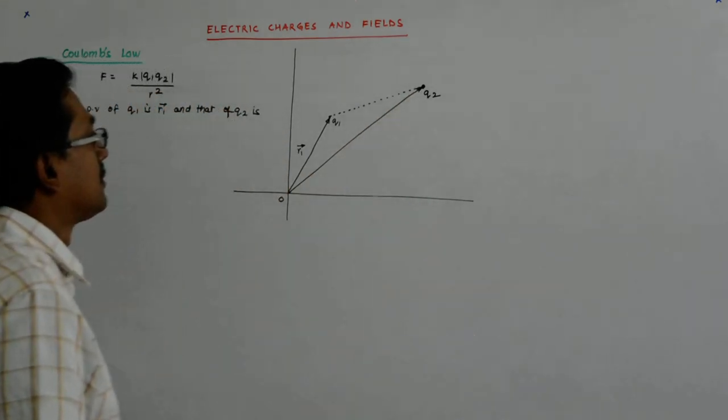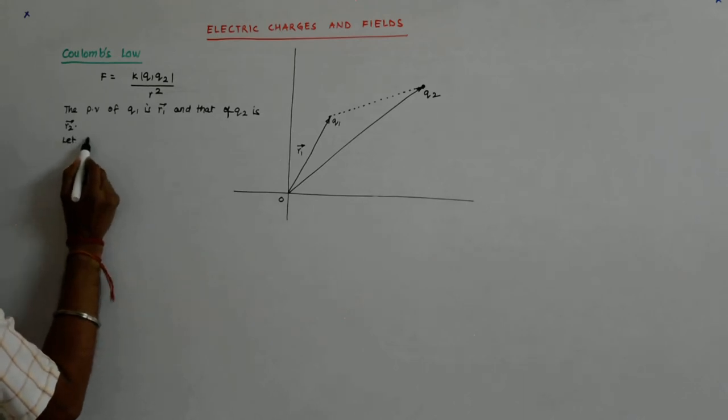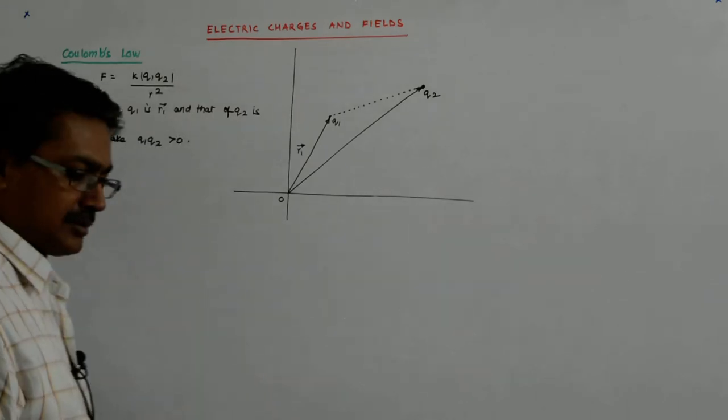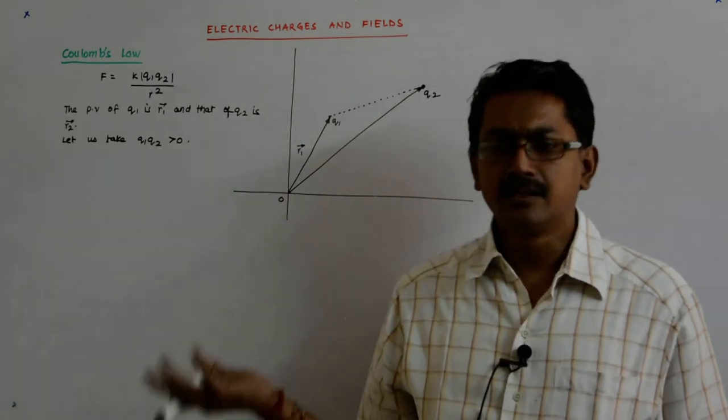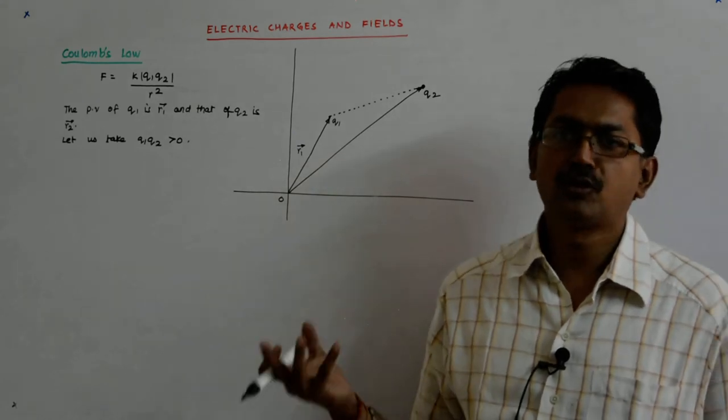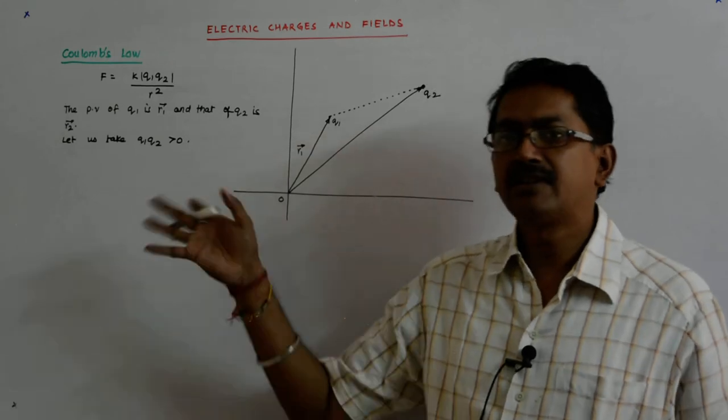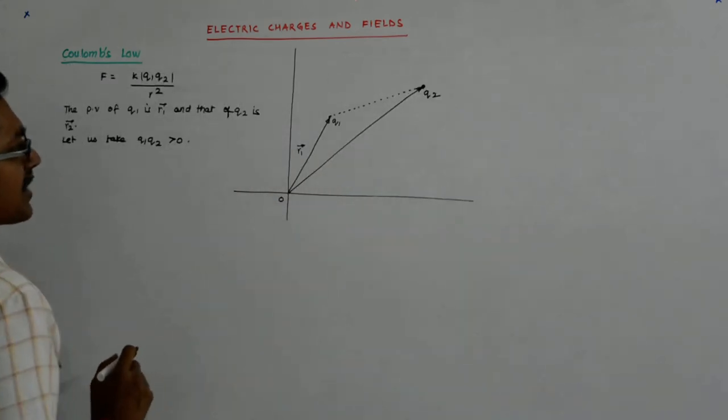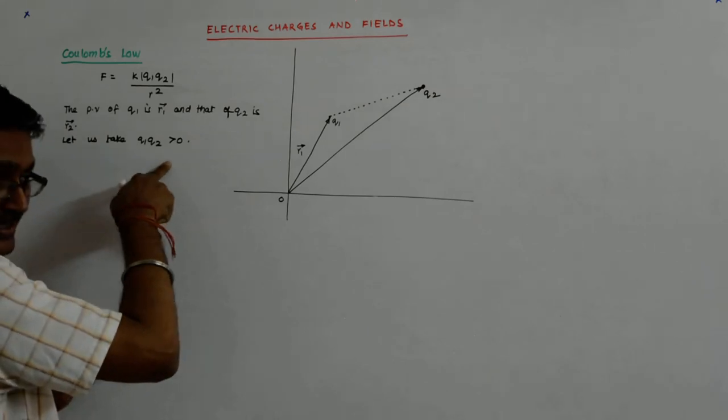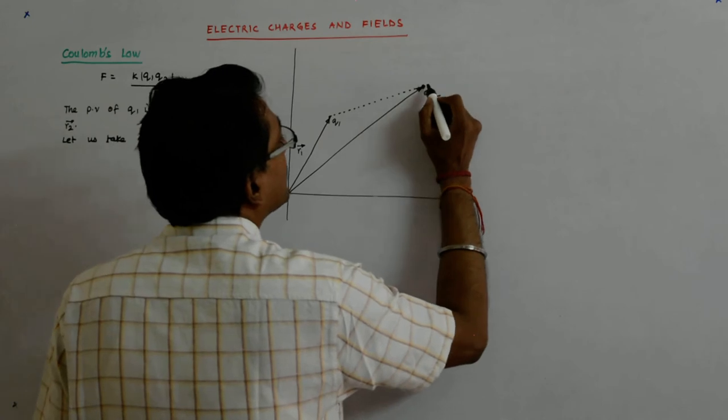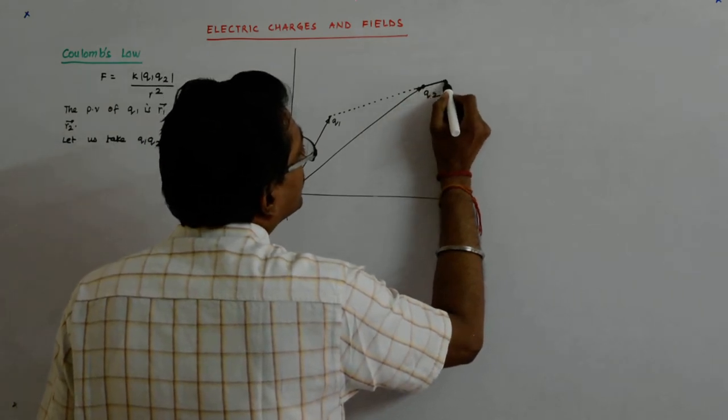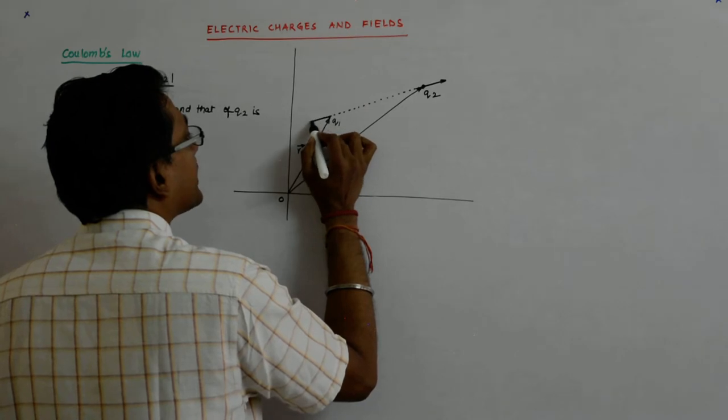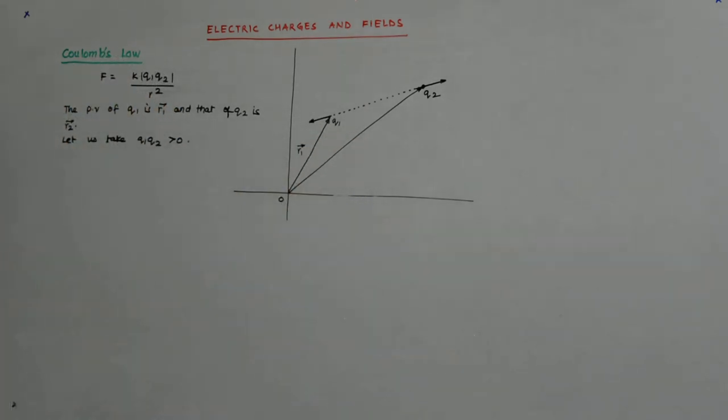Now, let us take q1*q2 greater than 0. What does it mean? That either both of them are positive or both of them are negative. When I say q1 and q2, I mean along with their signs. Later we will release this condition. But we are first investigating it when q1*q2 is greater than 0. When both of them are either positive or both of them are negative, the force will be repulsive, and we know from Coulomb's law that this force points in this direction while this force points in this direction.